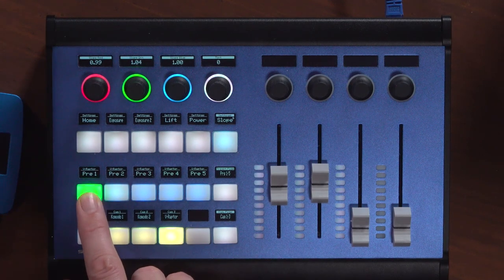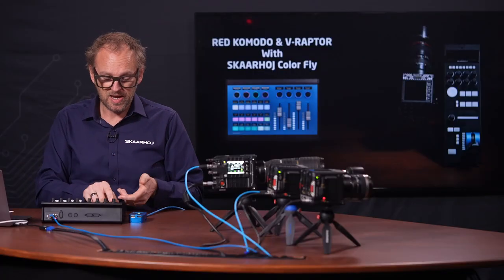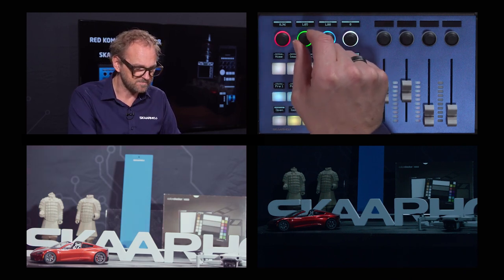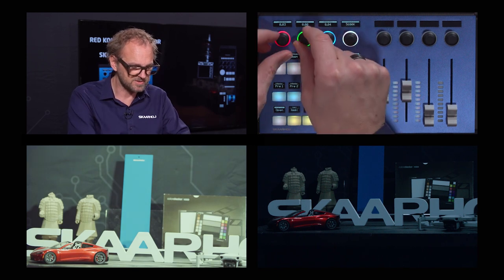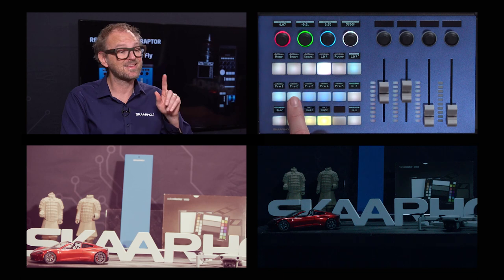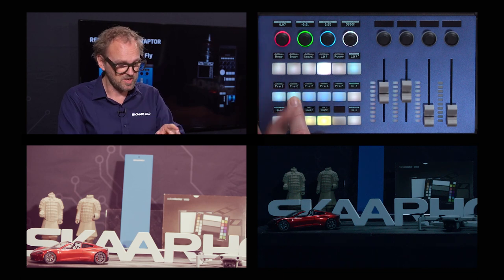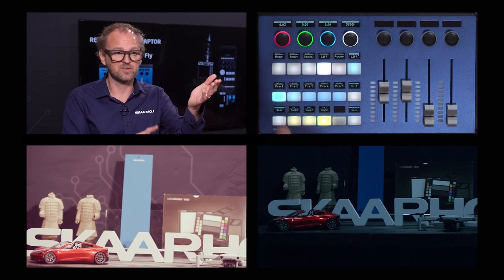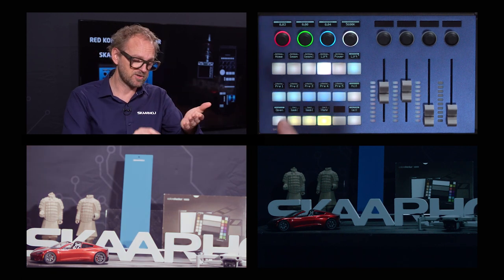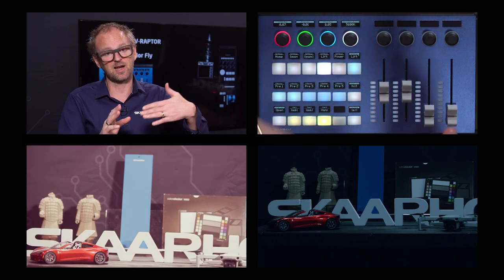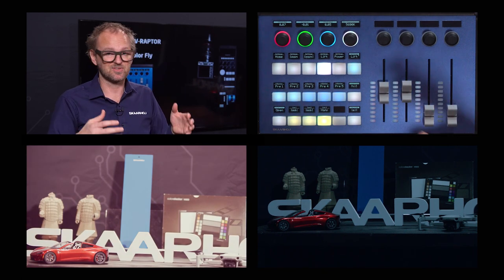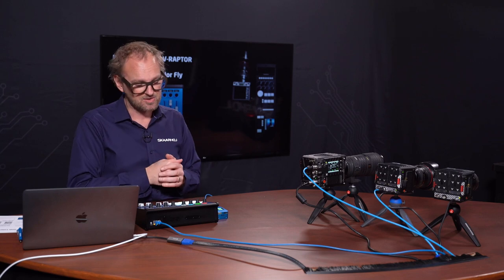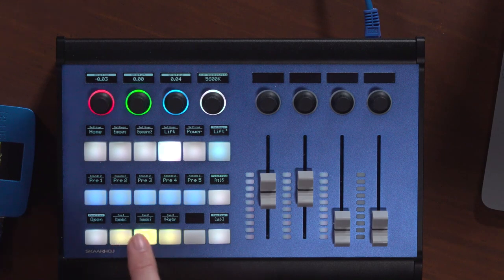I press and hold this key — it becomes green, which means it's stored. Now I'll change the settings slightly by turning the knobs a few more times, then press and hold preset number two. On this key I have now stored two presets. Looking at the image: pressing the first button gives me this look — like a scene file I recall. Pressing the second button gives me this look. Essentially we are storing these CDL values inside the Colorfly and recalling them to all parameters. This can be done for any number of cameras.